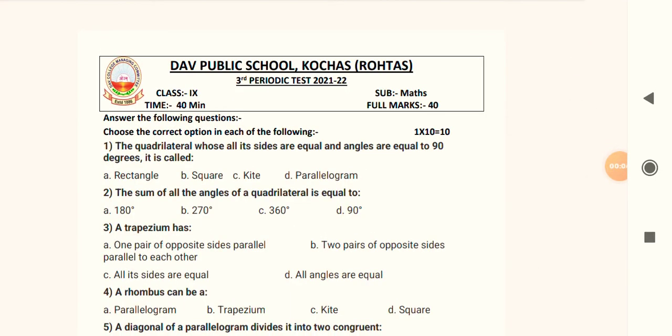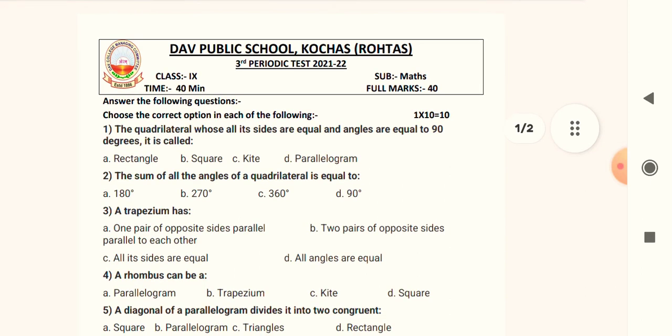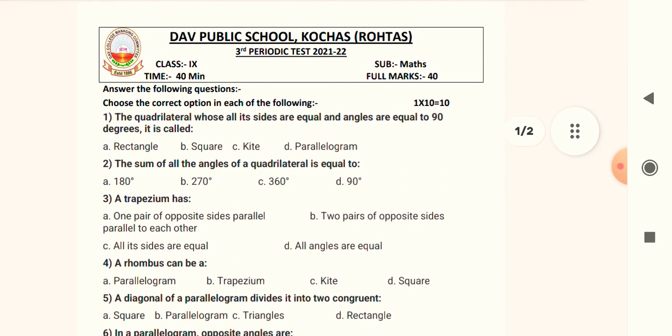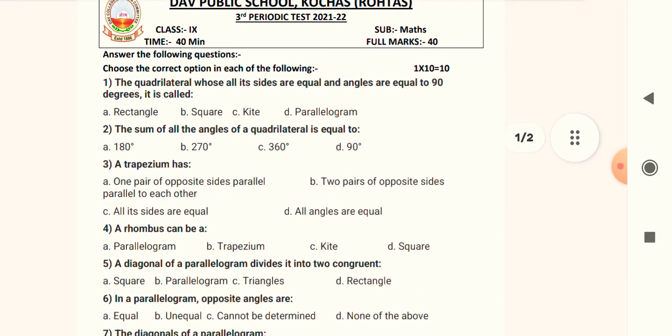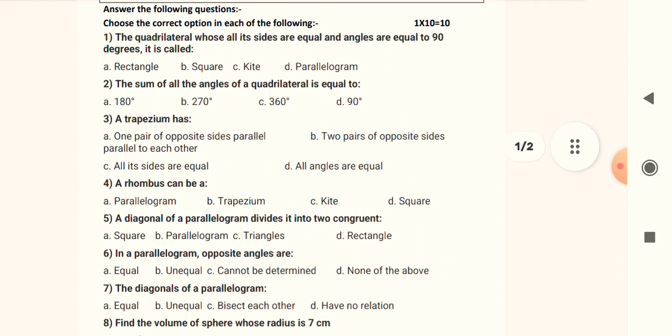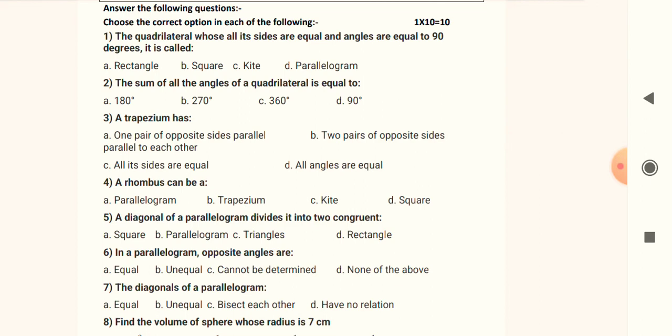Hello friends, welcome back to my channel once again. I am here with a third periodic test paper for maths. Here we start. The first questions begin with choose the correct answer in each of the following. There are 10 questions of objective type. You can see the questions start from question number one.